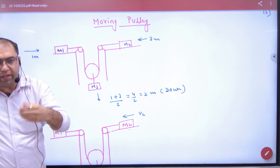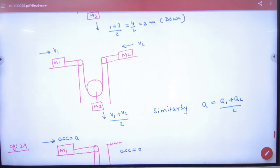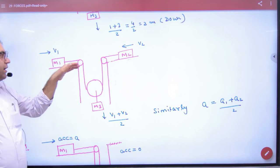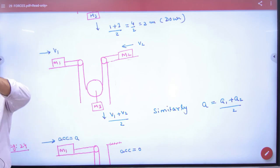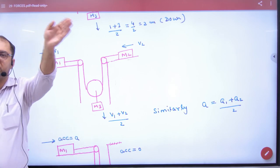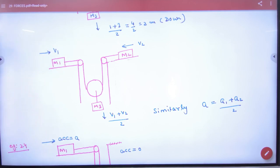Clear? Same concept applies for velocity also, because rate of change of displacement is velocity. So if this mass is coming here with v1 and coming here with v2, then at what velocity will this go down? Just do v1 plus v2 by 2, just as x1 plus x2 by 2, similarly v1 plus v2 by 2.